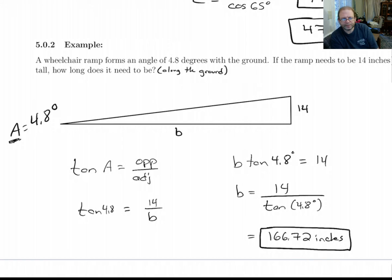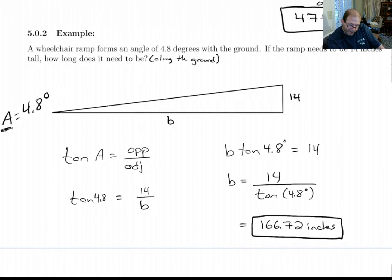Alright. This angle of 4.8, that's actually very close to the actual ADA requirement for a wheelchair ramp. So we get 166.72. What is that in feet? 166.72. If I divide that by 12, it gives me 13.89. And that's actually good. The real requirements for ADA is if a ramp is supposed to be 14 inches tall, it needs to have 14 feet of run. And this is very close. The angle here of 4.8 is rounded a little bit. But anyway, that's a good real world example of a trig problem.